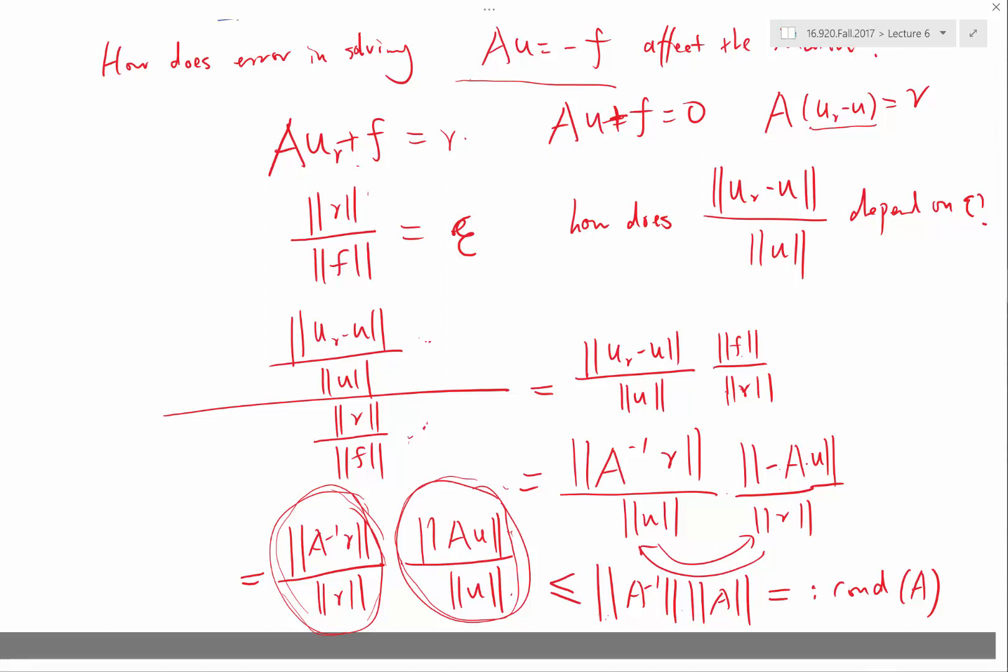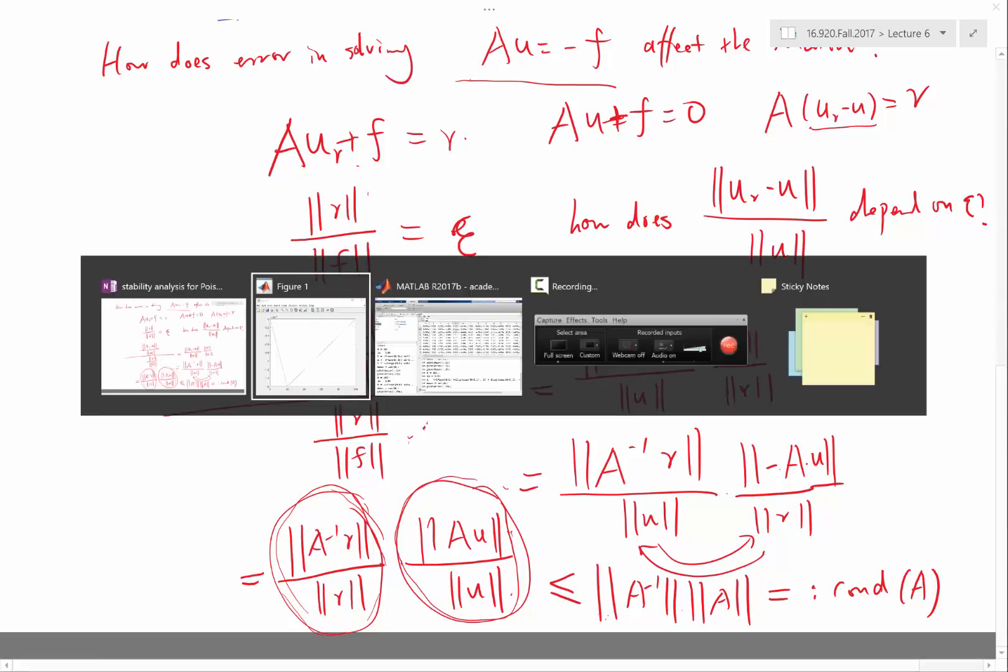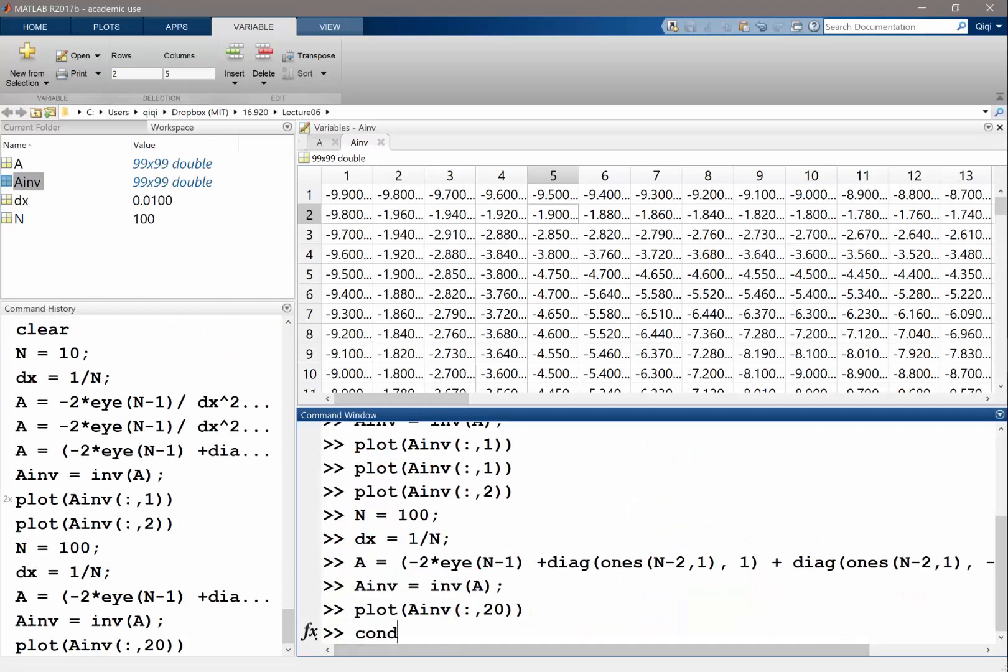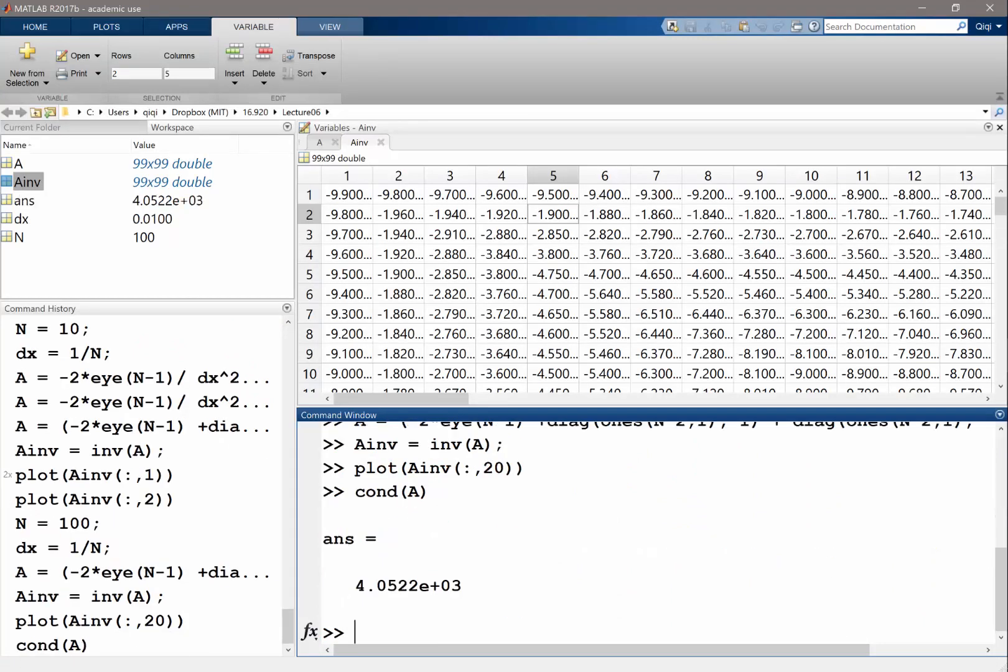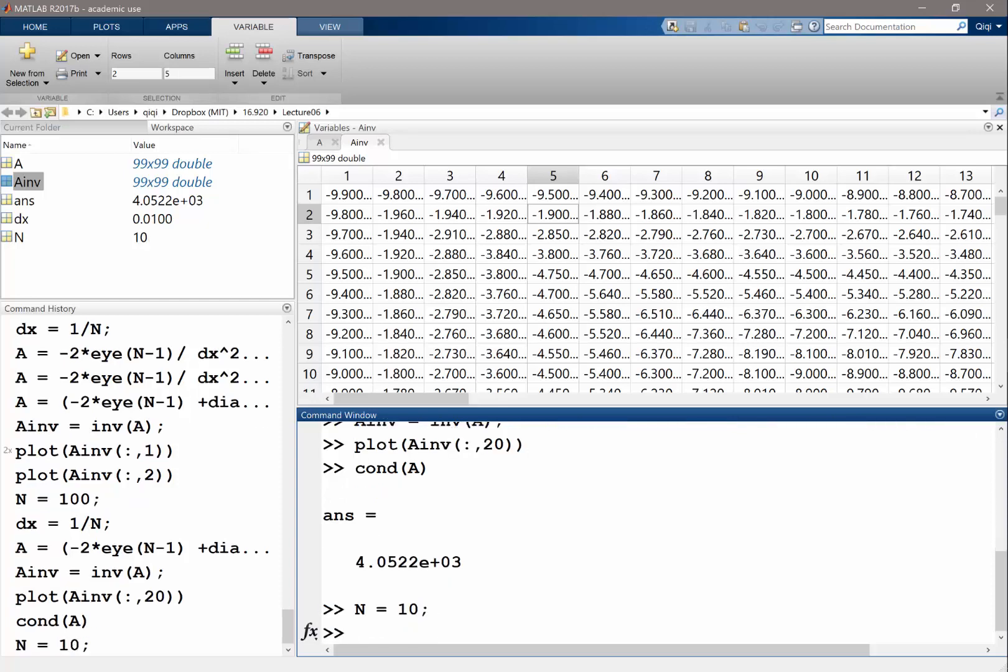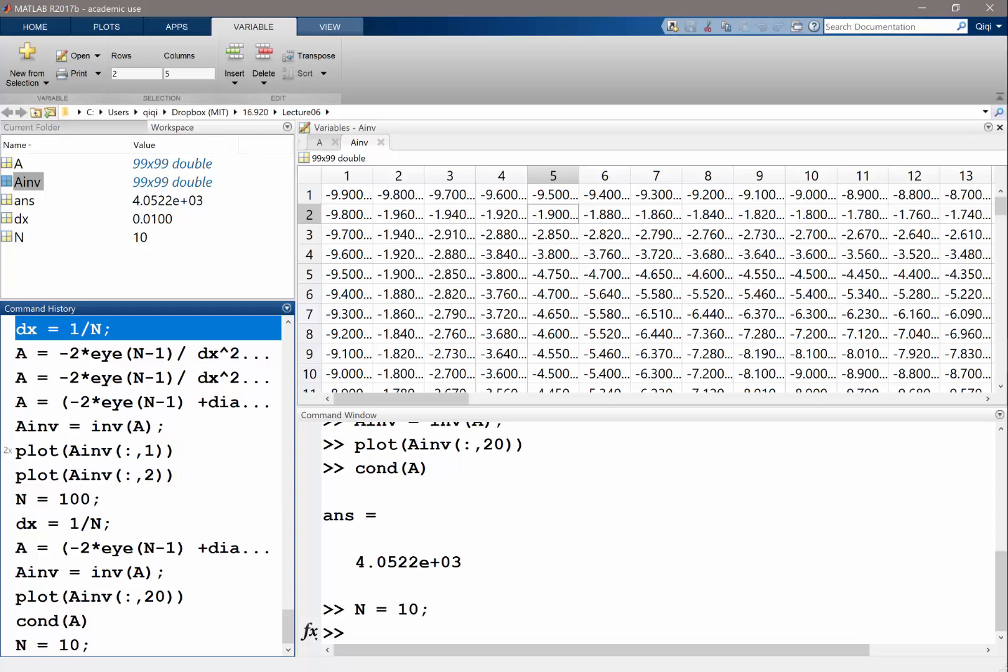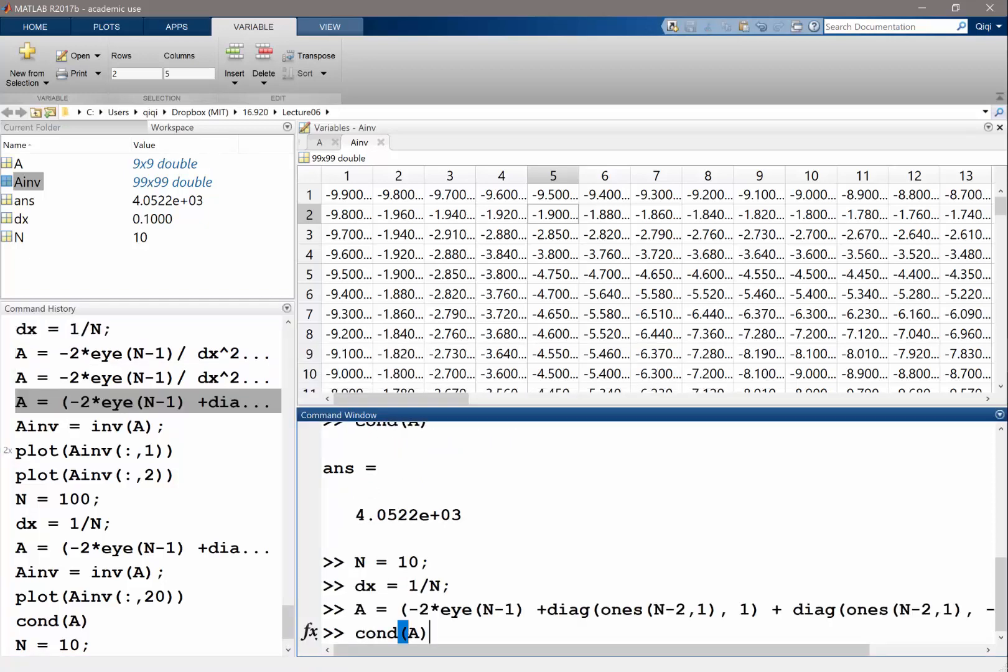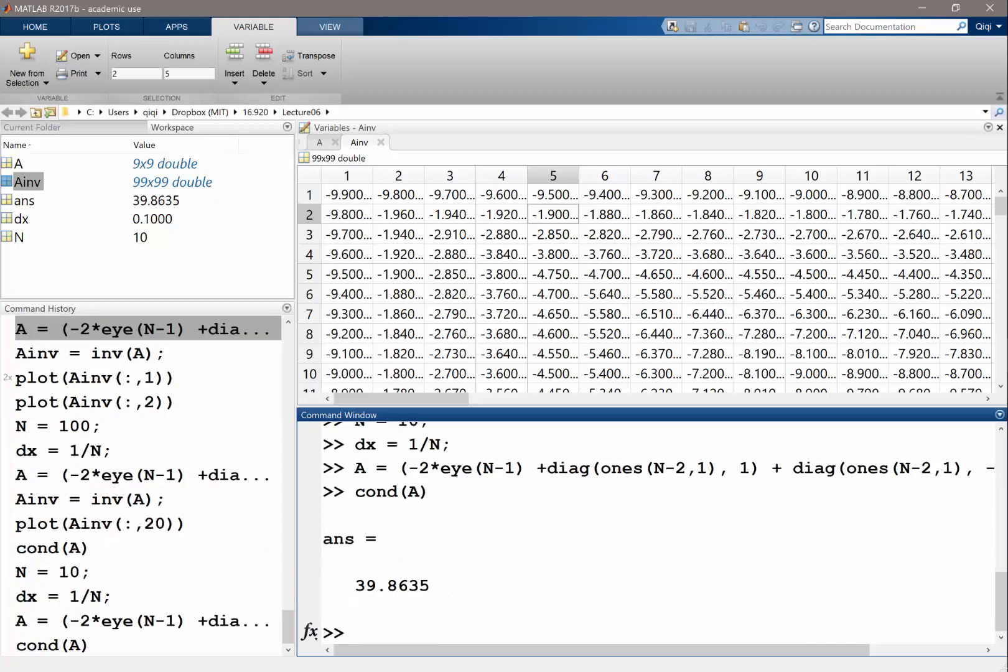And the condition number for the matrix is actually going to increase as you increase the number of grid points. So for example, MATLAB has a pretty good condition number calculator. So for N equal to 100, my condition number is 4000. And for example, for my old N equal to 10, I take the dx again, I compute A again. Condition number of A is a lot smaller. As I increase N, the condition number of A will keep increasing.